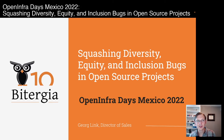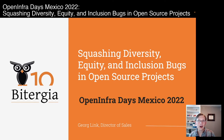Hello and welcome. My name is Georg Link. I'm here at the OpenInfraDays Mexico 2022 to talk about squashing diversity, equity, and inclusion bugs in open source projects. This takes an approach of thinking about DEI using how we fix issues in software to also fix issues in our communities and make them more welcoming and inclusive. I'll share a hands-on, practical, research-backed approach with resources at the end so you can do this in your projects as well.